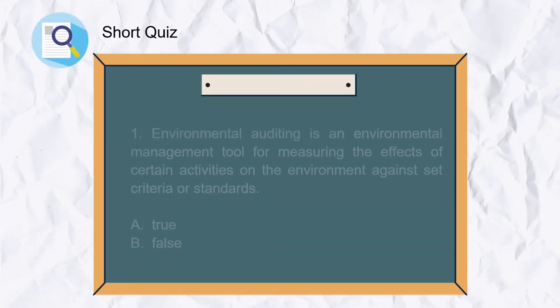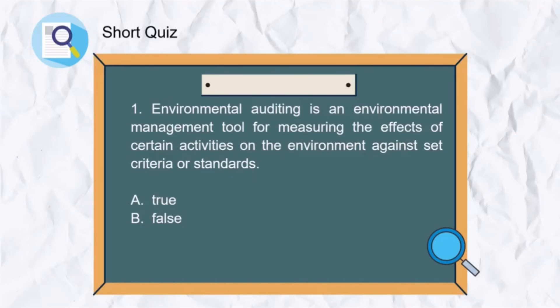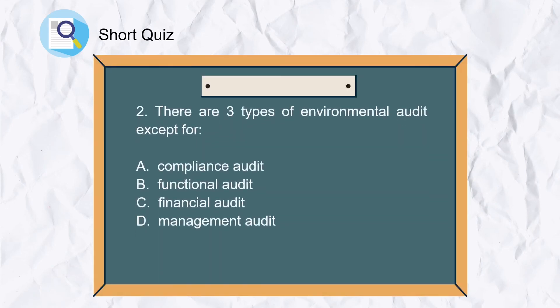For the first question: environmental auditing is an environmental management tool for measuring the effects of certain activities on the environment against set criteria or standards. For the second question, there are three types of environmental audit. The options are: A. Compliance audit, B. Functional audit, C. Financial audit, and D. Management audit. The answer is C. Financial audit.